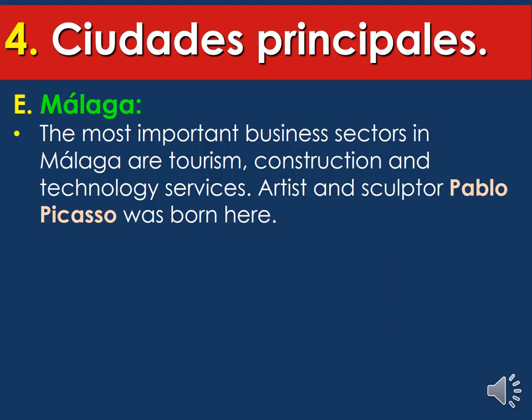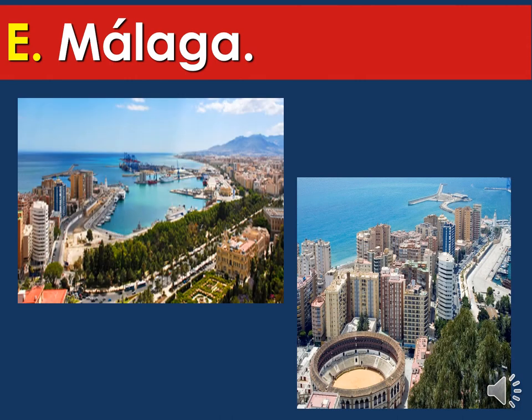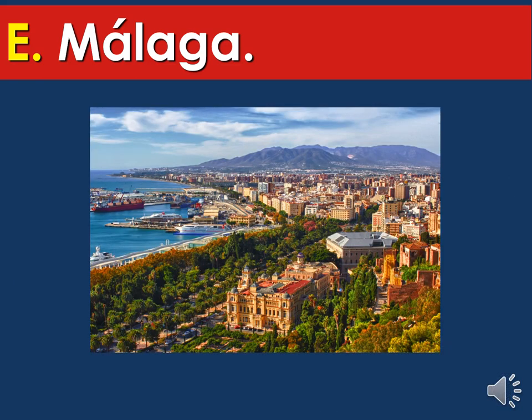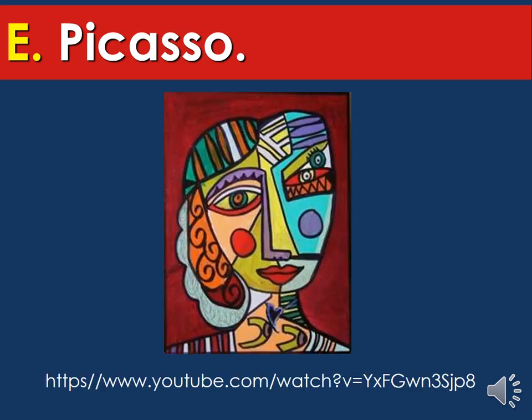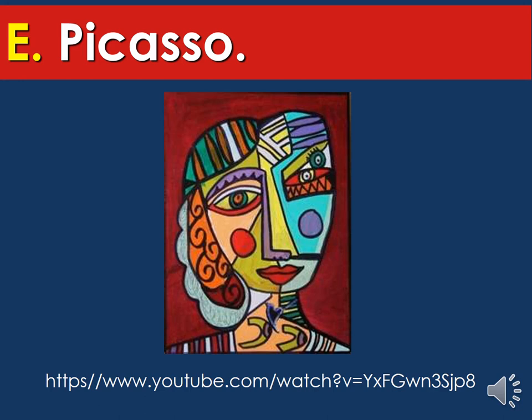Our fifth main city is Malaga. Malaga is one of the most important business sectors in Spain, dedicated to tourism, construction, technology services, artists, and sculptors. Pablo Picasso was actually born here — the same Picasso who painted Guernica in the Museo Reina Sofía. We're going to be discussing more about his life in the videos provided — you have to listen to them and take notes.